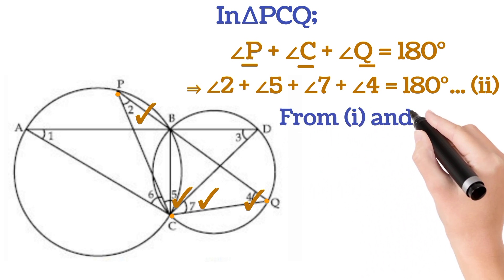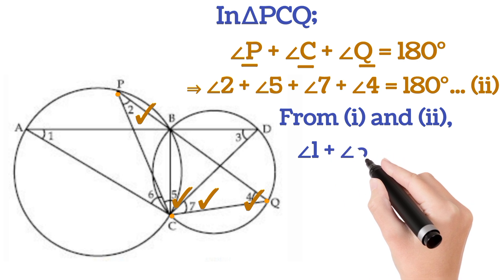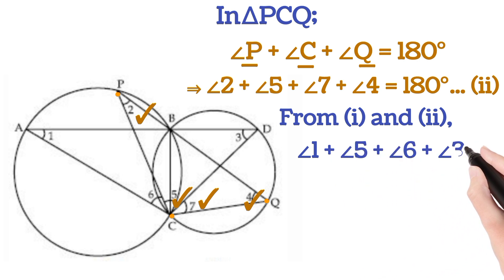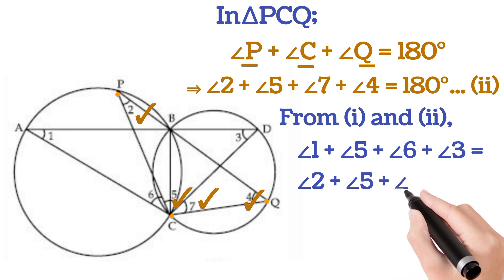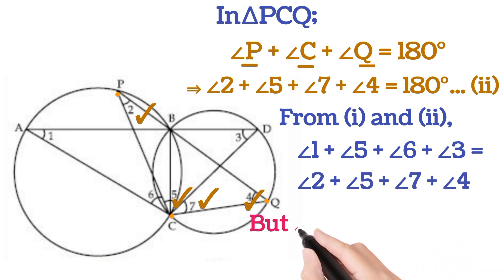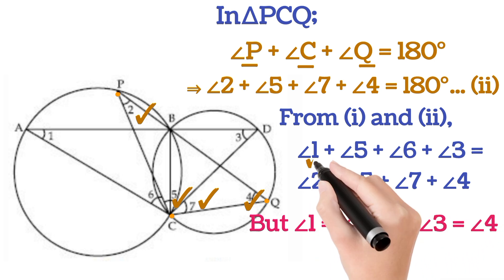On comparing equations 1 and 2, we get angle 1 plus angle 5 plus angle 6 plus angle 3 is equal to angle 2 plus angle 5 plus angle 7 plus angle 4. But we also know that angle 1 is equal to angle 2 and angle 3 is equal to angle 4.